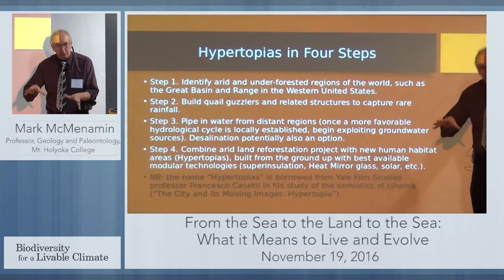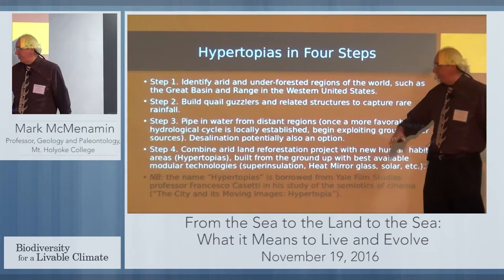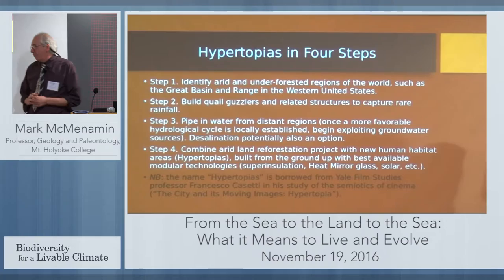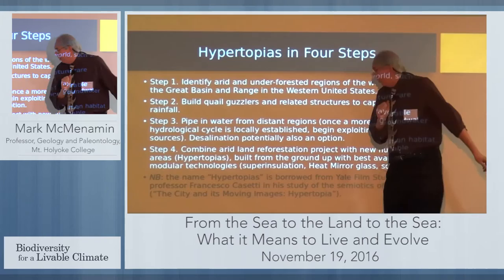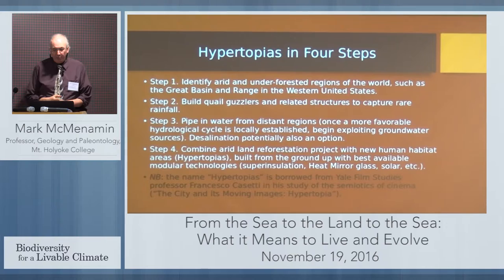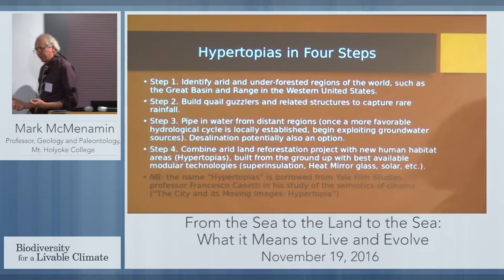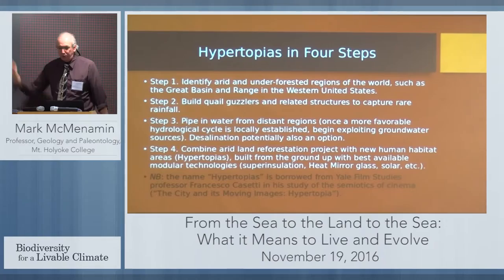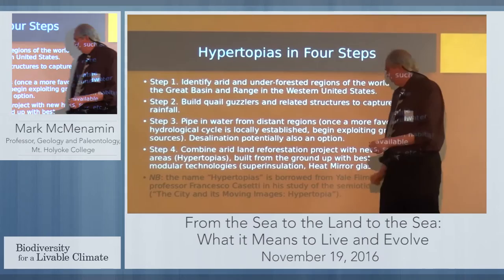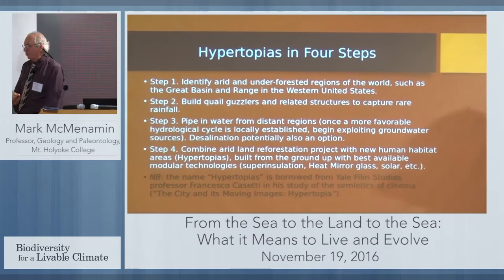In certain areas, desalinization is also potentially an option. Step four: combine arid land reforestation with new human habitat areas — hypertopias built from the ground up with the best available modular technologies. If you're starting from the ground up, you can use all the good stuff: super insulation like Amory Lovins does in Snowmass, Colorado; heat mirror glass, which was used in the space shuttle to keep out the cold of interstellar space and should be much more widely used; and solar, of course.